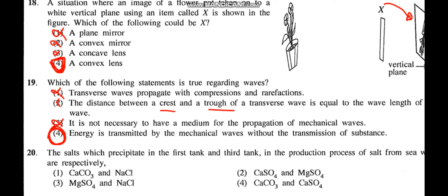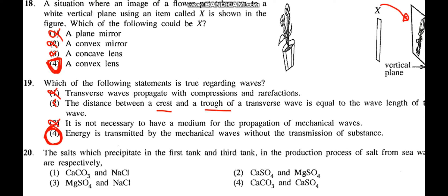Question 20: Which salts precipitate in the first tank and the third tank in the salt production process? In the third tank, NaCl precipitates — so options 2 and 4 are eliminated. In the first tank, calcium carbonate precipitates. Magnesium sulfate comes with NaCl in the third tank. So the first tank has calcium carbonate and the third tank has sodium chloride. That covers the first 20 MCQs — practice more past papers and follow the question pattern. Thank you for watching.